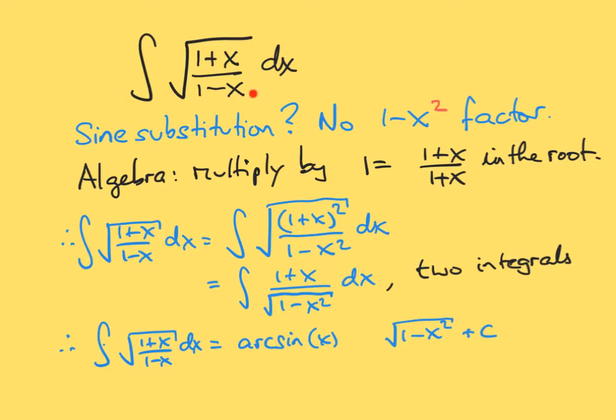And you might think from this square root of 1 minus x to make a sine substitution. But bear in mind, this is not 1 minus x squared. It is just 1 minus x.